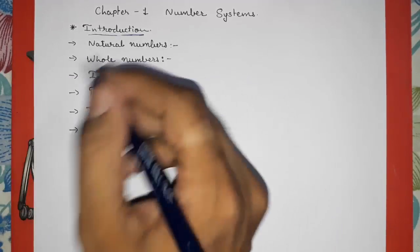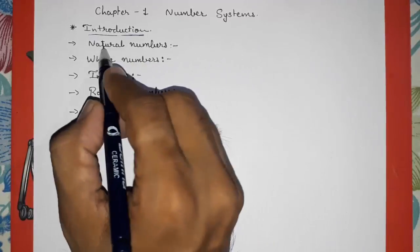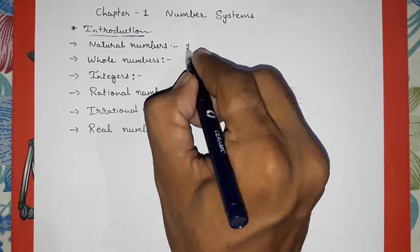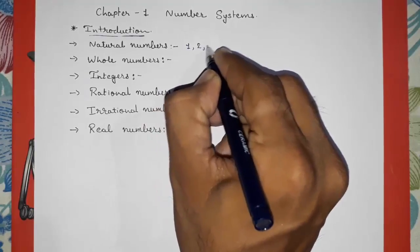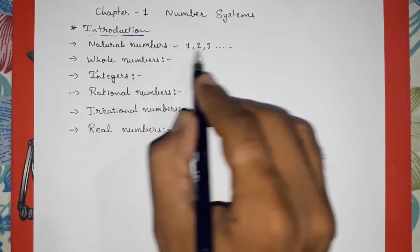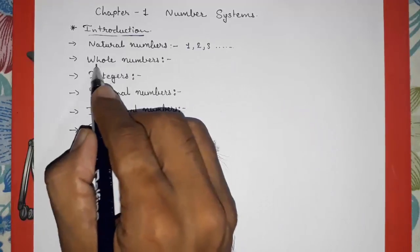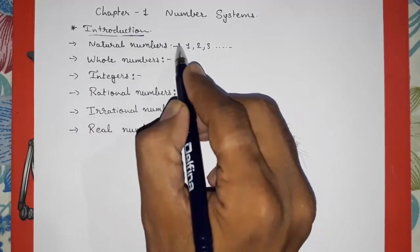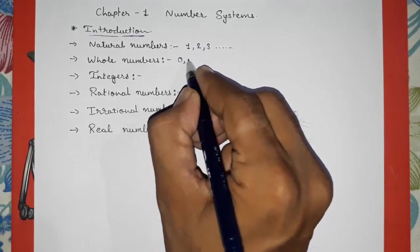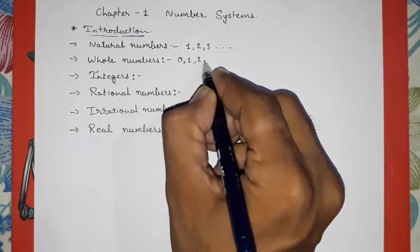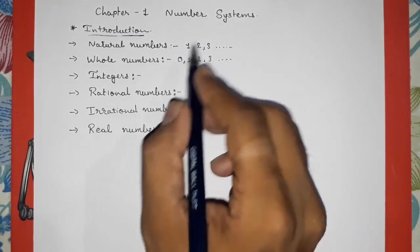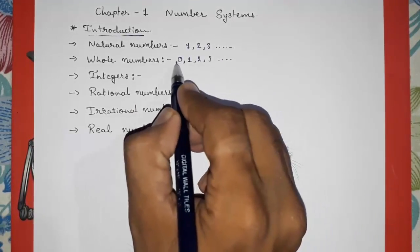First of all, what are natural numbers? Numbers starting from 1, 2, 3 up to infinity are called natural numbers. Now, whole numbers: if we add 0 to natural numbers, this becomes 0, 1, 2, 3 up to infinity — that is whole numbers.